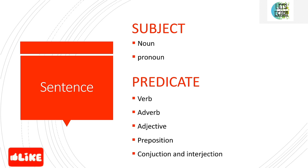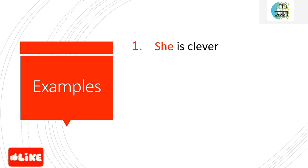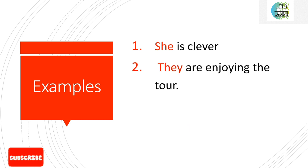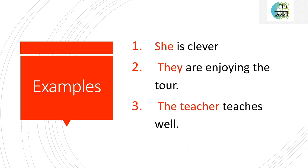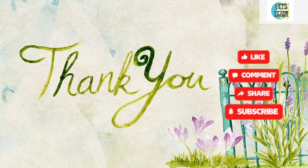Now let's see some examples. 'She is clever' — here 'she' is the subject and 'clever' is the predicate. 'They are enjoying the tour' — 'they' is the subject and 'enjoying the tour' is the predicate. 'The teacher teaches well' — these are some examples. Like, share, and subscribe to my channel. Bye bye!